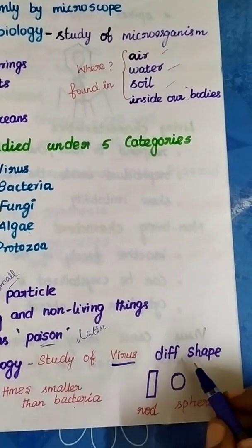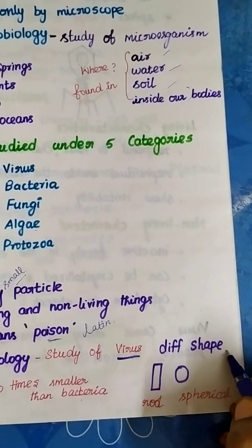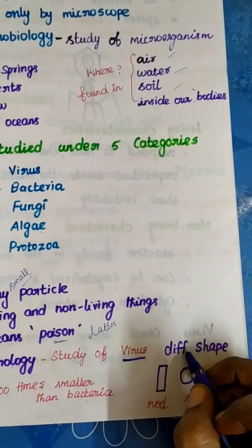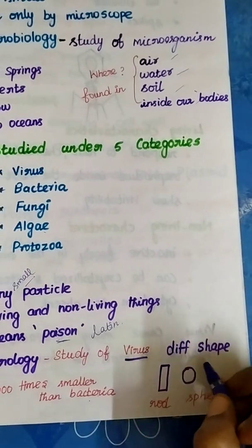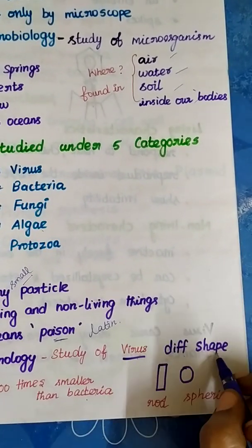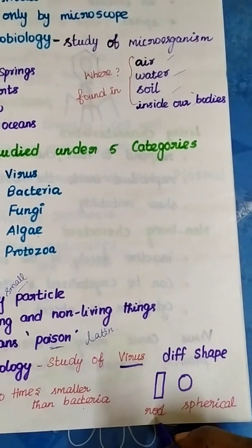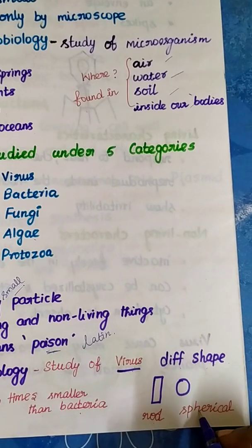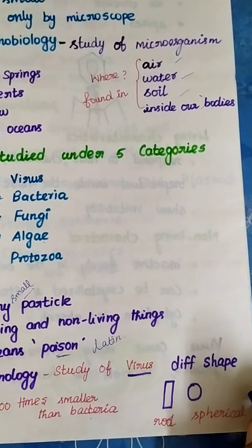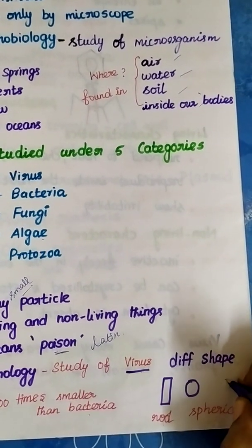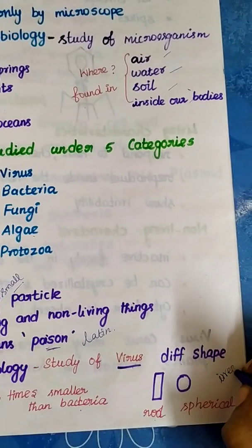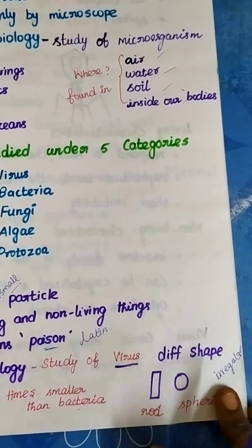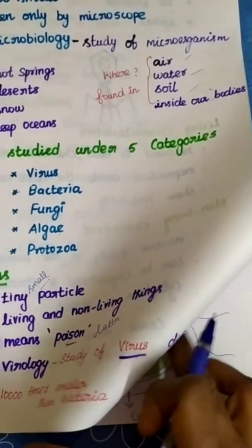Viruses have different shapes. A virus may be rod-shaped, spherical-shaped, or irregular in shape. It may also have a particular shape depending on the virus particle.